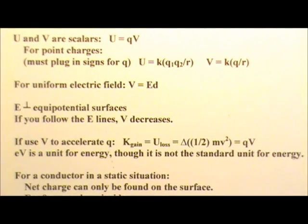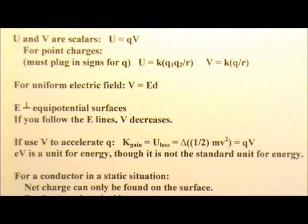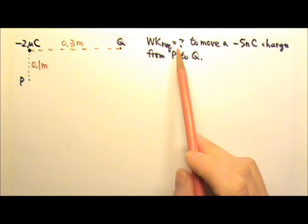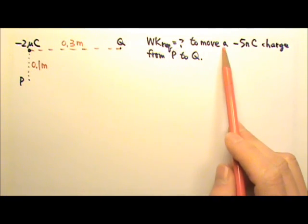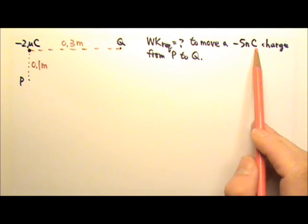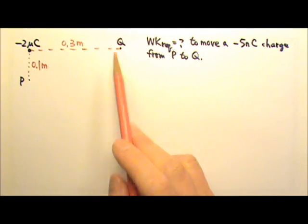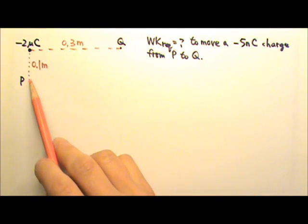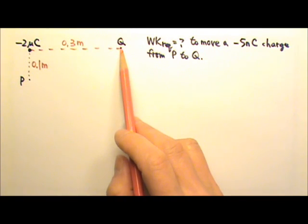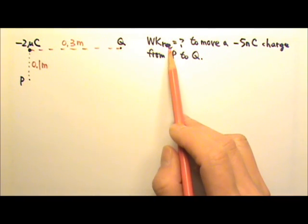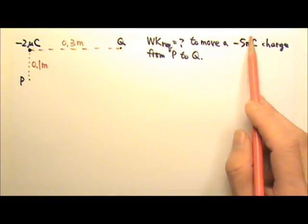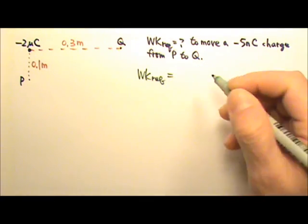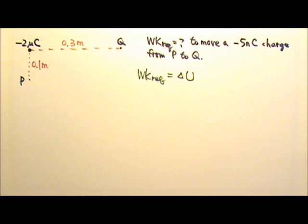In this lesson we will review the electric potential V and the electric potential energy U. Let's say we have a point charge right here and we are looking for the work required to move another charge, a negative 5 nanocoulomb from P to Q. If we are looking for the work required, that means we are not moving the charge any faster to accelerate the charge, we are just doing minimum work to move the charge. So the kinetic energy of the particle doesn't change. That means the required work is turned into the change in potential energy of the charge.